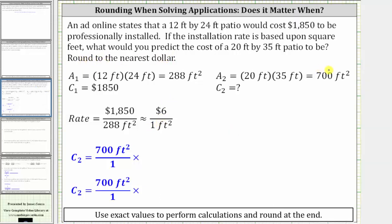To find the cost of the second patio, we begin with the area of the second patio, and then multiply by the rate. The exact rate is $1,850 per 288 square feet. Using the exact rate, notice how the units of square feet simplify out,